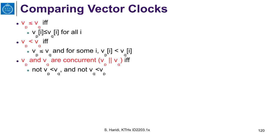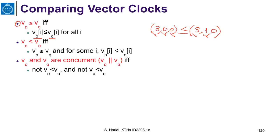Now let us compare vector clocks. Some vectors will be comparable — one is either equal to the other, less than, or greater than — but some vectors will be non-comparable. We say that vector VP is less than or equal to VQ if element-wise every element in VP is less than or equal to the corresponding element in VQ. For example, the vector (3, 0, 0) is less than or equal to the vector (3, 1, 0): the first elements are equal, the second is less, and the third elements are equal.